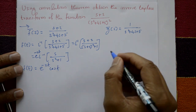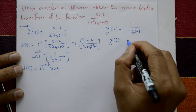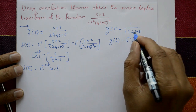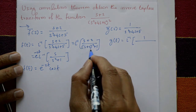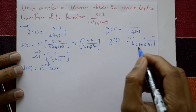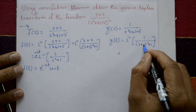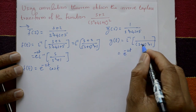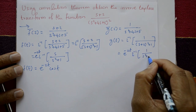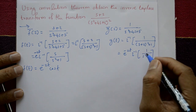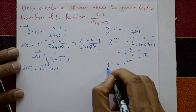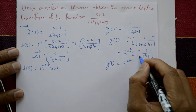Next, find g(t): take the inverse of 1 / ((s + 2)² + 1). Using the shifting property, take outside: e^(−2t) multiplied by the inverse of 1 / (s² + 1). Therefore g(t) = e^(−2t) sin(t).